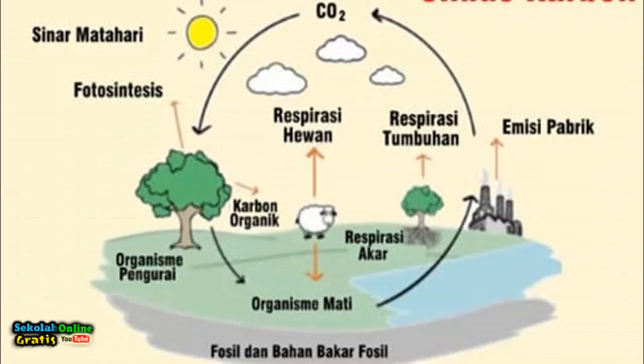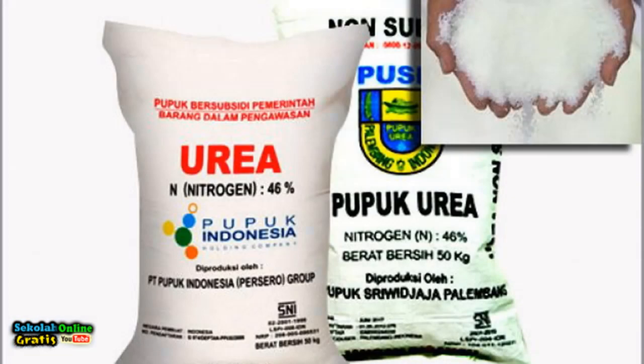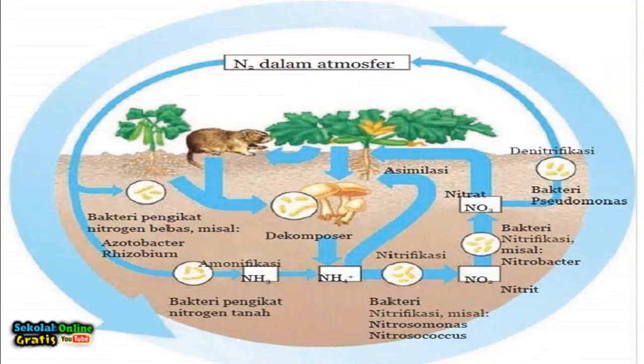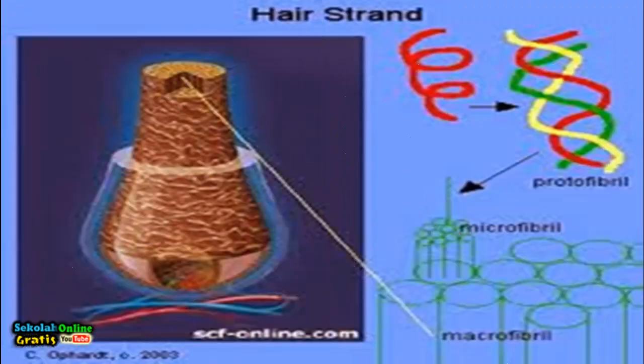The formation of glucose in photosynthesis, the decomposition of waste, the carbon dioxide gas cycle and the nitrogen cycle are examples of chemical processes that occur in nature and can maintain the balance of nature. Some of the chemicals needed by living things are provided by nature, some are made by humans through chemical processes in industry.